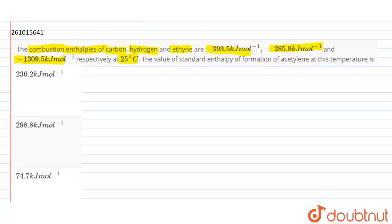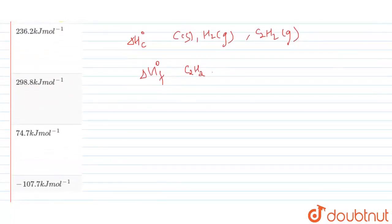So what do we have given? We have given ΔH°c, which is standard heat of combustion of carbon, hydrogen and ethyne. And we need to find ΔH°f, which is the heat of formation of ethyne. So this is a very simple question of thermodynamics, Hess's law based. Let's write the reactions first.